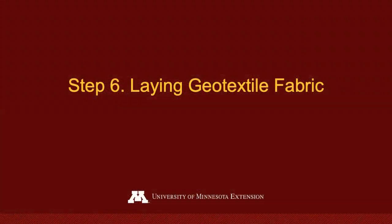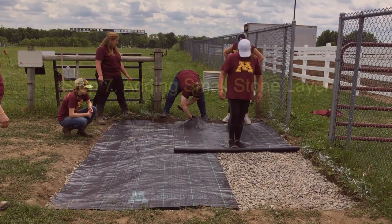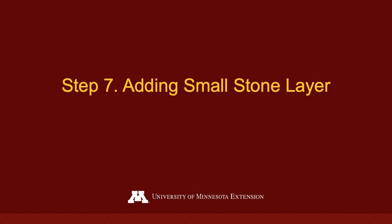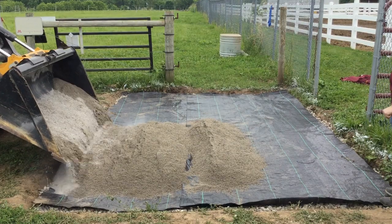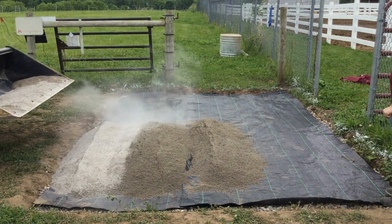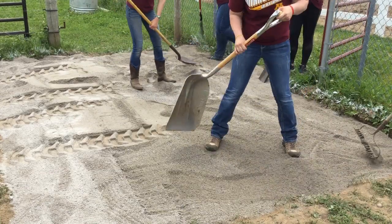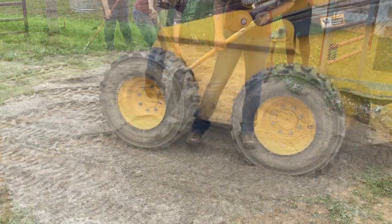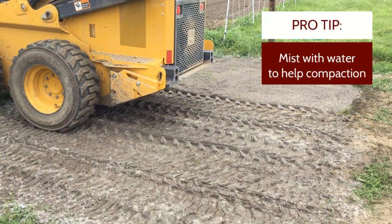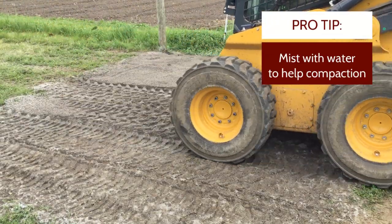Next, you will need to lay out the second layer of geotextile fabric just as done for the base layer of the pad. For your last step, install the final layer of stone — this will be your smaller stone product. Fill to a four-inch depth and pack with the vibratory plate compactor, commercial roller, or large farm equipment. If stone is not compacting well, mist with water to ensure that fines stick together when compacting.